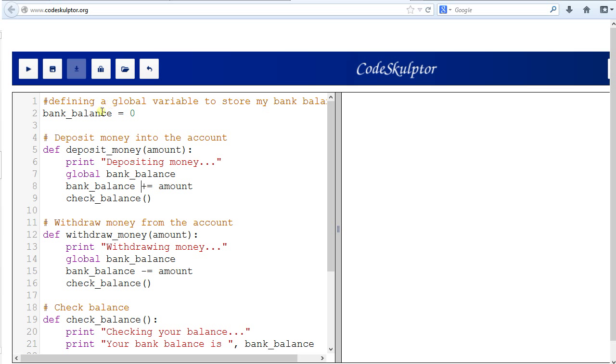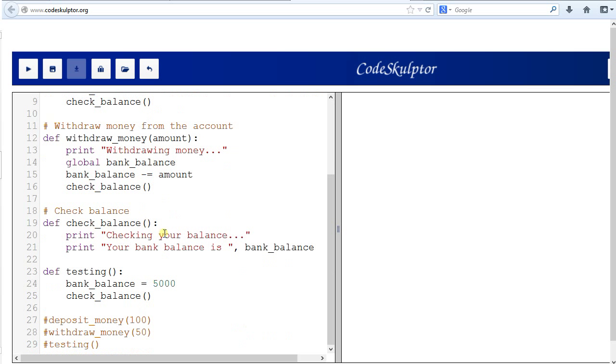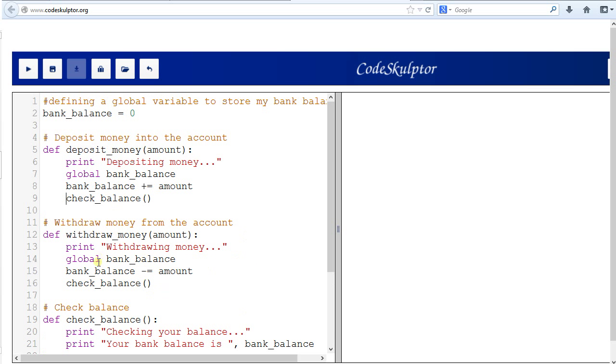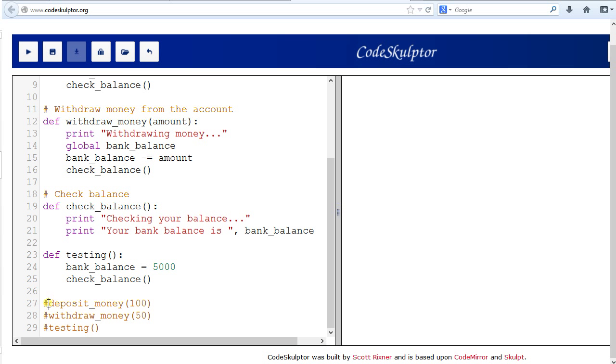And then it takes that global variable and adds the amount that was passed into this function. And then it makes another function called check_balance. And if you look at my check_balance function here, it's pretty simple. It spits out the bank_balance value back to the console so we can see what our balance is. I have another function, withdraw_money, and that's pretty self-explanatory. It takes the money that we pass into the function and deducts it from our bank_balance variable and prints out our balance. Alright, so let's go ahead and test this.